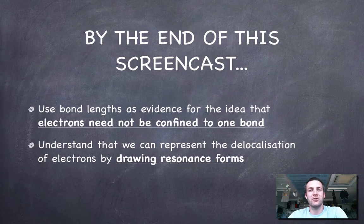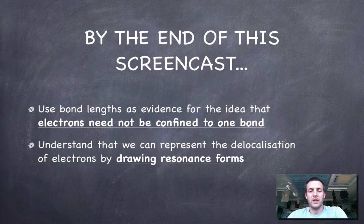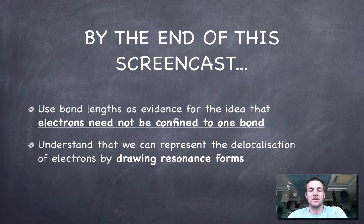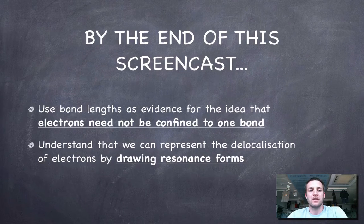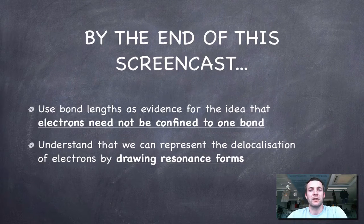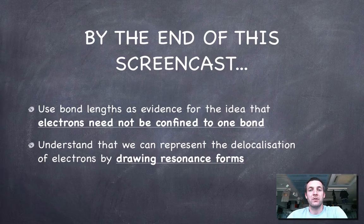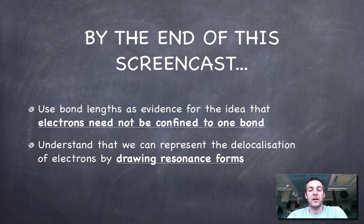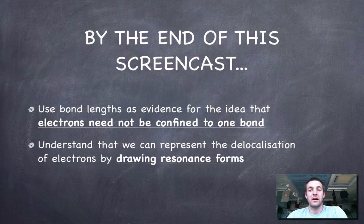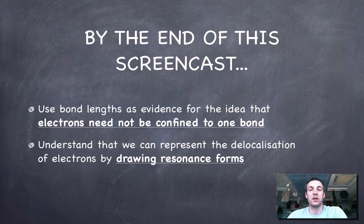Here we're going to introduce the idea that bond lengths, by looking at the bond lengths in a molecule, we can get some evidence for what type of bonds there are in a molecule and therefore where the electrons are in which bonds. We can also understand that by representing molecules using things called resonance forms, we can actually show how electrons are delocalizing in those molecules.